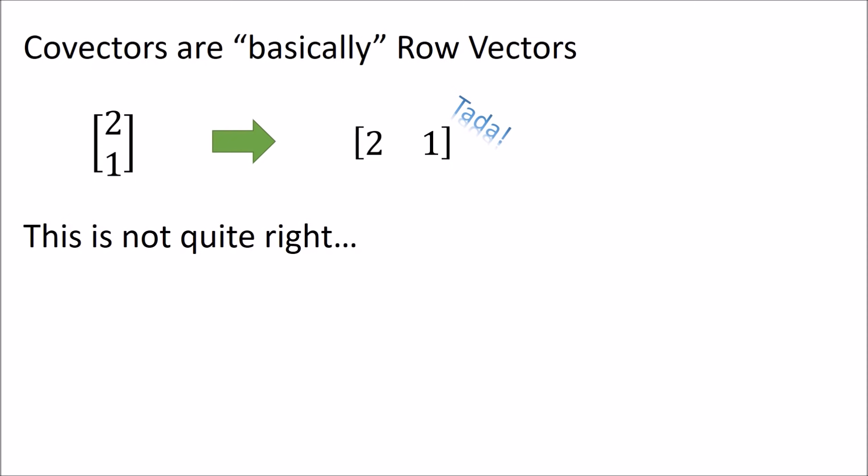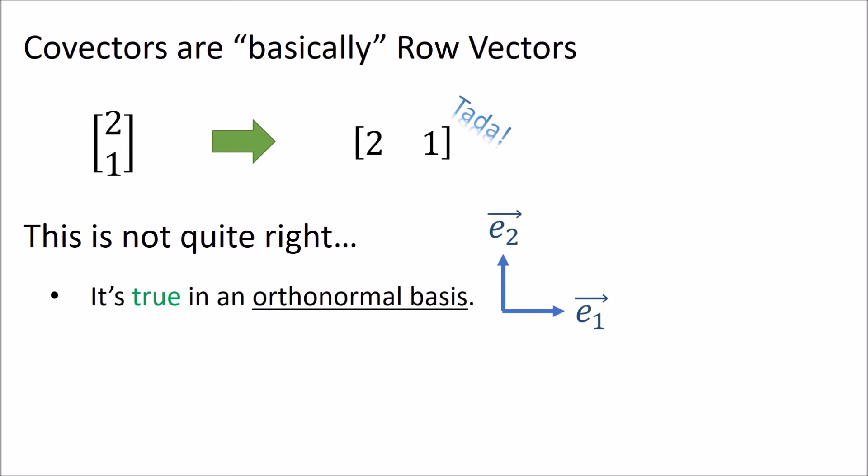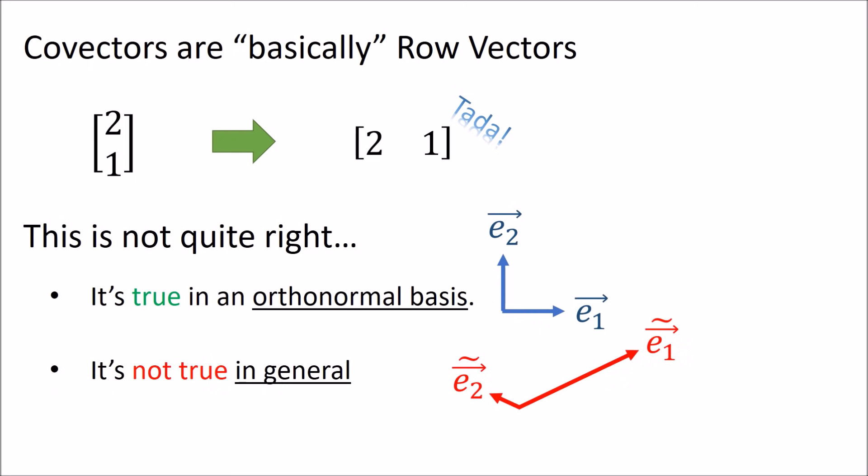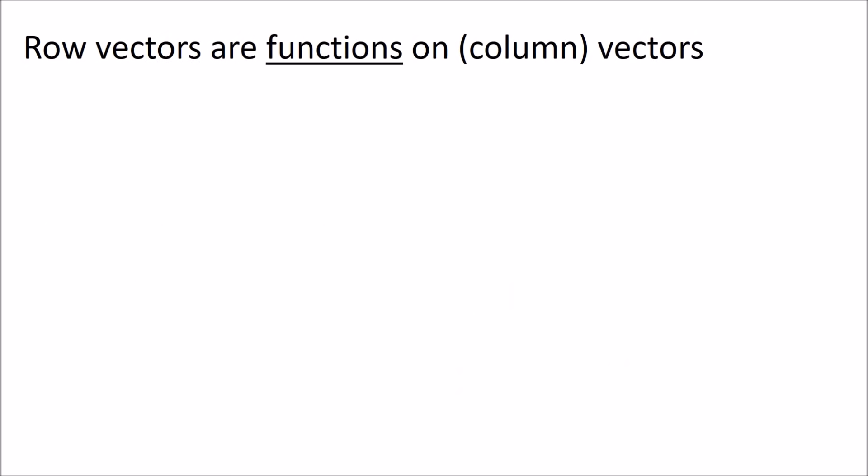The reason you might think that they're basically the same is that you've normally been dealing with them in an orthonormal basis, which is a basis where all the vectors are one unit long and they're all perpendicular to each other. So when we're dealing with an orthonormal basis, the idea of flipping column vectors onto their side to get row vectors is actually true, but it's not true in any other coordinate system. To realize why, we're going to have to think about row vectors as functions.